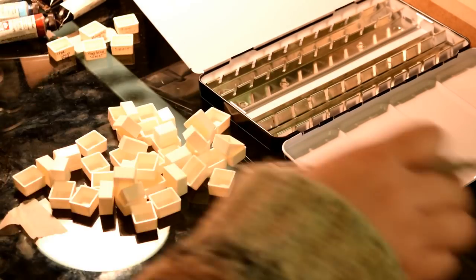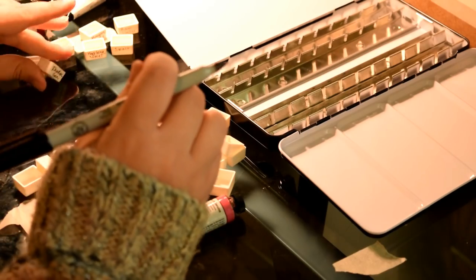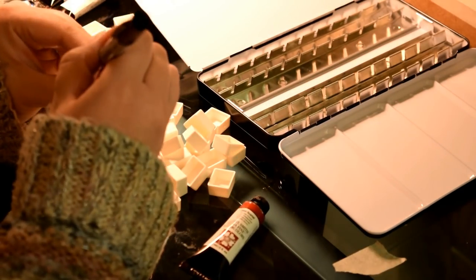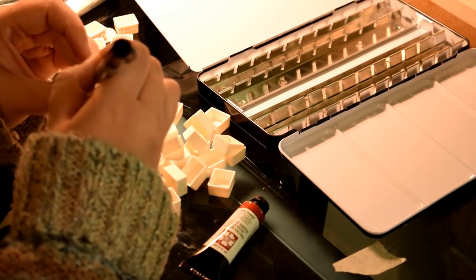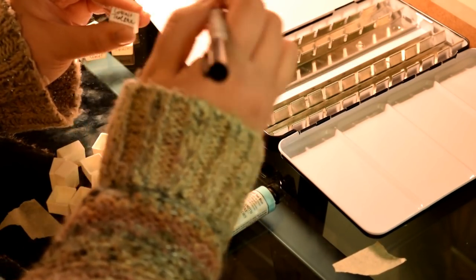Right now I'm just writing on the sides DS which is short for Daniel Smith and then the name of the color on the other side of the pan. Since I'm labeling these I'll be able to find the pan that I want if I'm mixing a certain color.